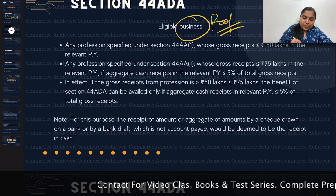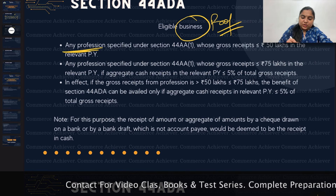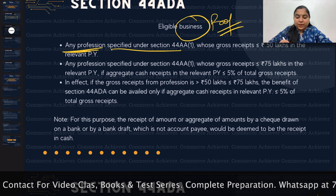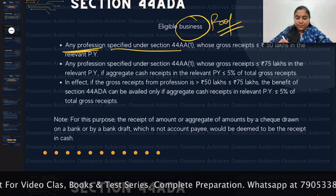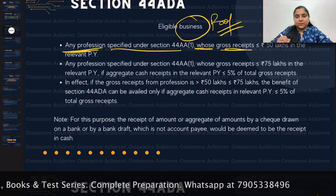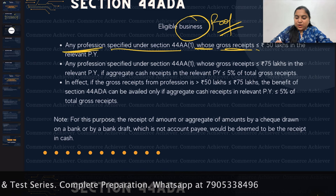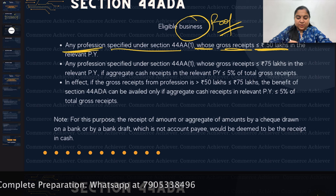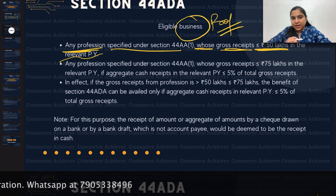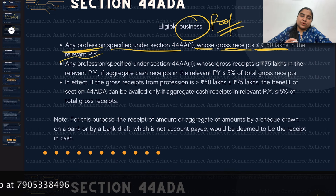Any profession specified under Section 44AA sub-clause 1, whose gross receipt is equal to or less than 50 lakhs in a relevant previous year, is eligible for Section 44 ADA.